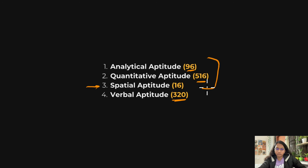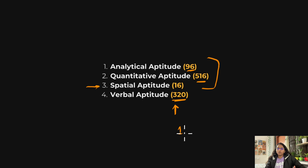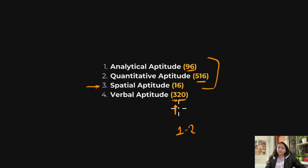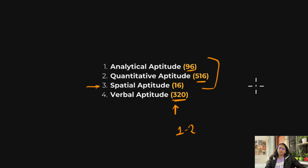For verbal aptitude, I suggest you don't study it explicitly. There are only one or two questions from verbal aptitude in GATE. Watching a full systematic lecture series will take a lot of time and still doesn't guarantee you'll solve those questions. Just practice the questions if you want, or simply know basic grammar rules — otherwise focus on analytical, quantitative, and special aptitude.